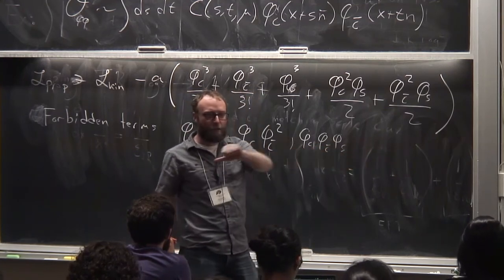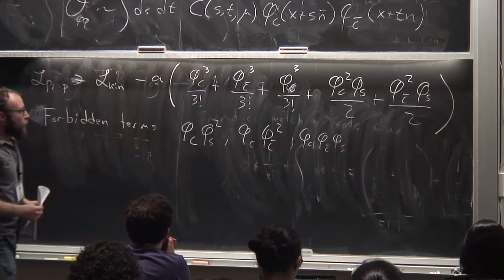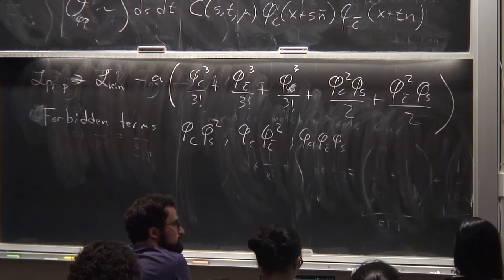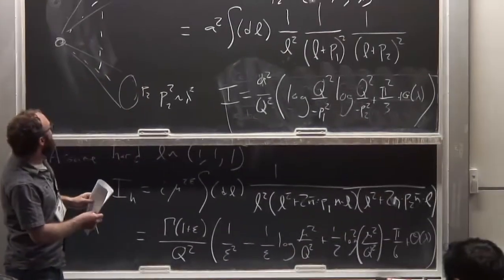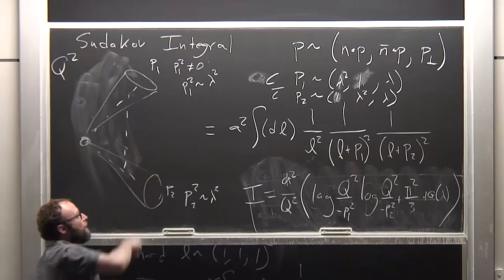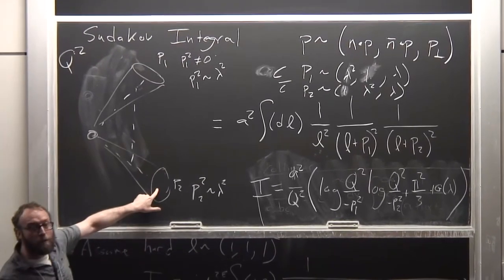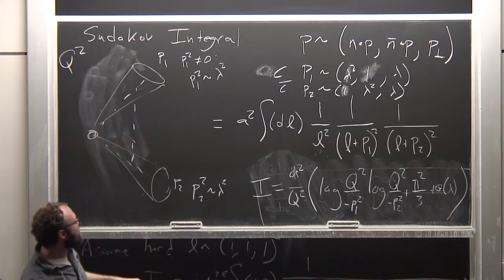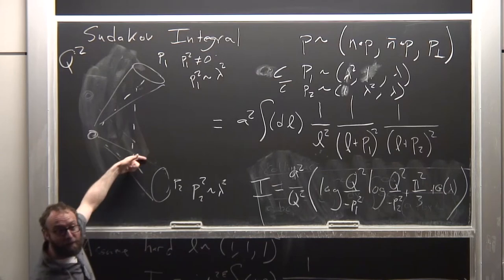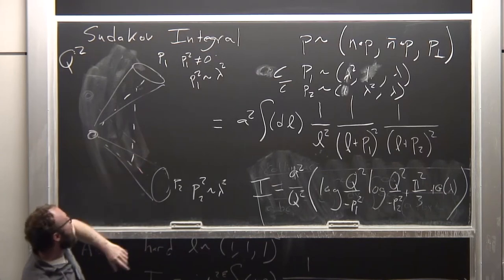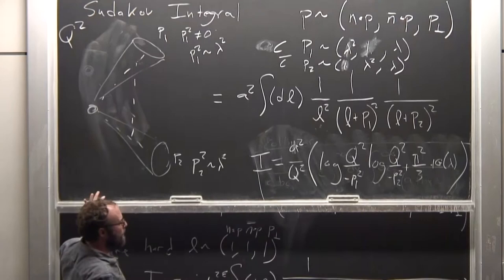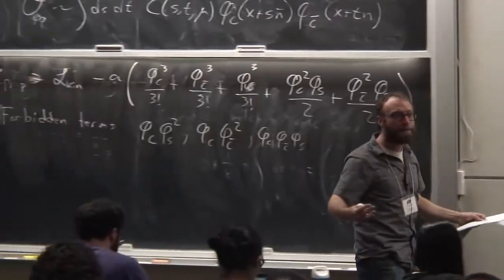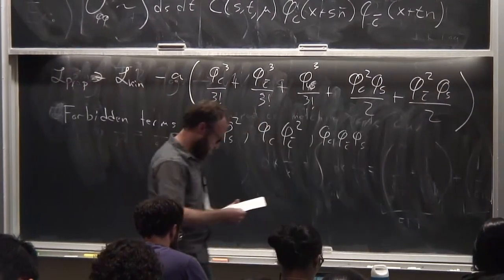Here are the kinds of things we throw away: phi_c * phi_{us}^2, phi_c * phi_{c-bar}^2, phi_c * phi_{c-bar} * phi_{us}. These don't respect momentum conservation to order lambda. A hard line splitting into two soft things violates momentum conservation. A hard line turning into two collinear things in opposite directions clearly violates momentum conservation. And a collinear thing becoming an anti-collinear thing and a soft thing—also violates momentum conservation.